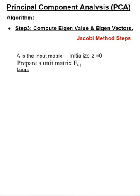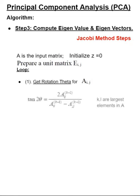We start with a loop, and we have four sub-steps within the loop. The first sub-step is to get rotation theta for the A matrix. Here, we are taking an arc tangent of a number.